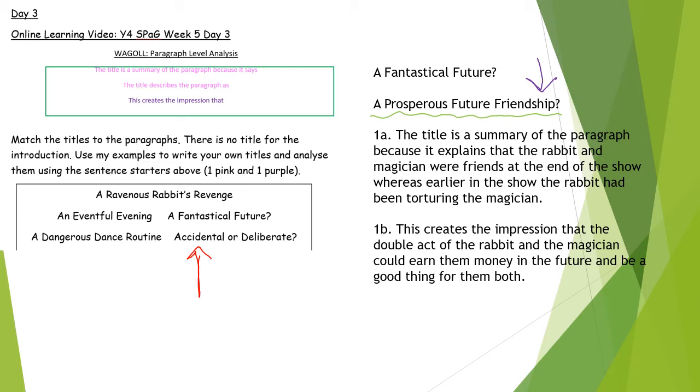1b. Now before you start your purple sentence, check that you've got some adjectives in your title because if you've not got enough words in your title, you will really struggle to do a second sentence. So 'a prosperous future' is basically what I'm talking about in the second one. This creates the impression that the double act of the rabbit and the magician could earn them money in the future and be a good thing for them both.